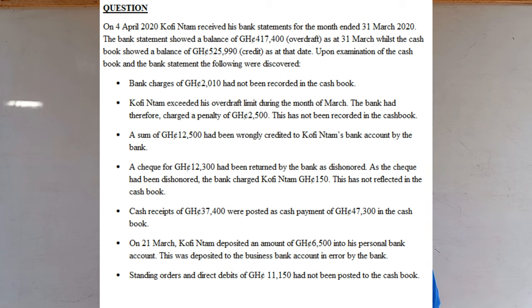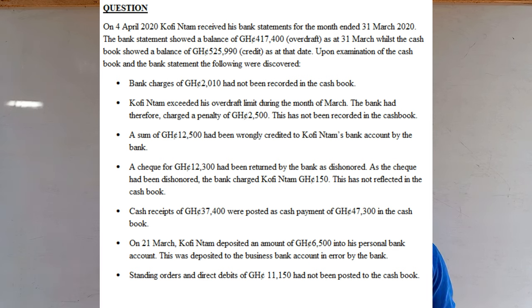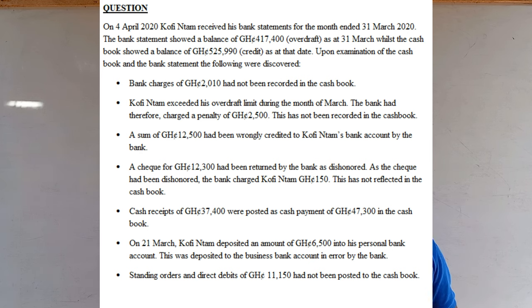First, bank charges of 2,010 Ghana cedis had not been recorded in the cash book. Then Kofintam exceeded his overdraft limit during the month of March. The bank had therefore charged a penalty of 2,500. This has not been recorded in the cash book.